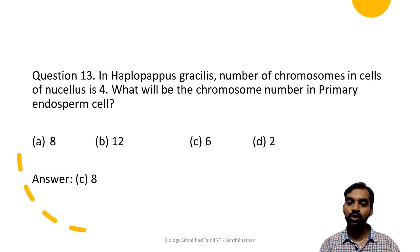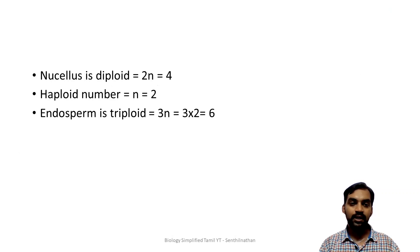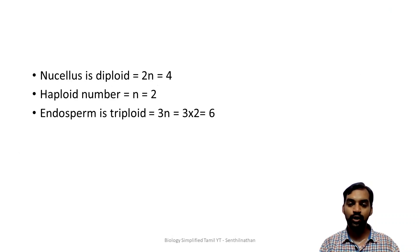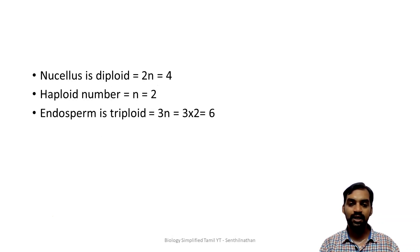In Haplopappus gracilis, the number of chromosomes in the cells of nucellus is 4. What will be the chromosome number in the primary endosperm cell? The answer is 6. The nucellus cells are diploid, so 2N = 4, meaning N = 2. Endosperm is triploid (3N), so 3 × 2 = 6. Therefore C, 6 is the answer.